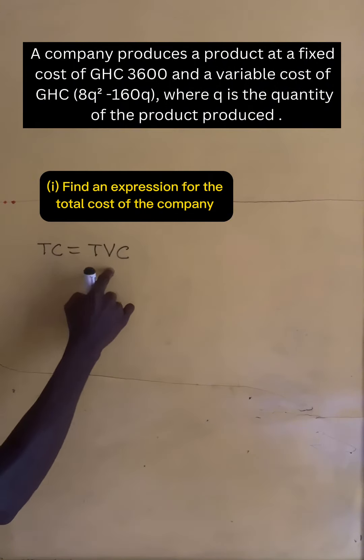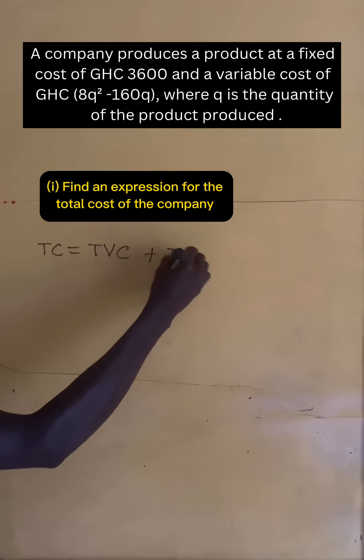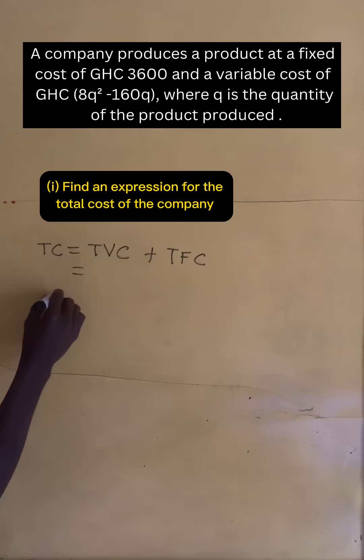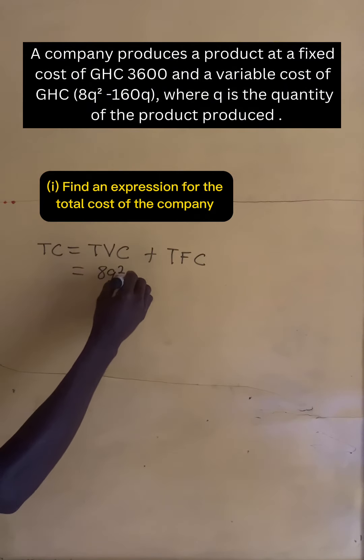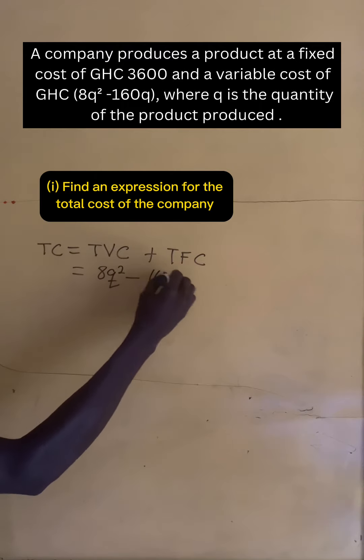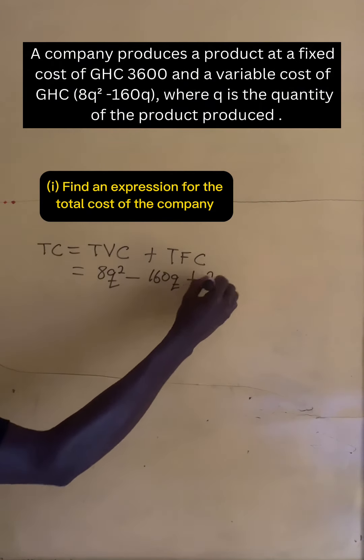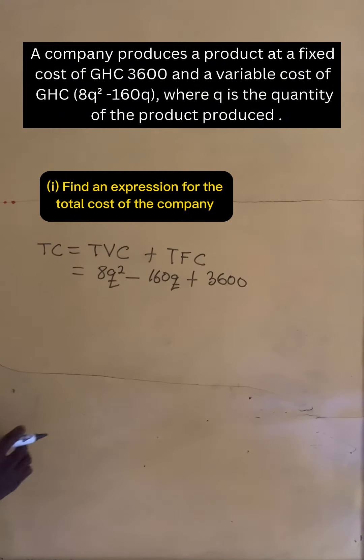We know that the total cost is equal to total variable cost plus total fixed cost. So the total variable cost is 8q² minus 160q, plus the total fixed cost which is 3,600. This gives us the expression for the total cost of the company.